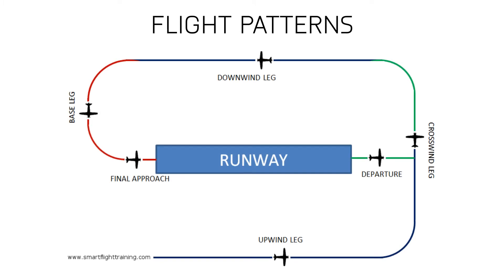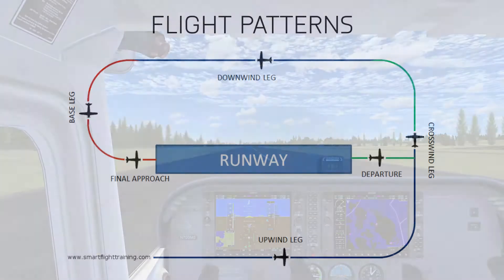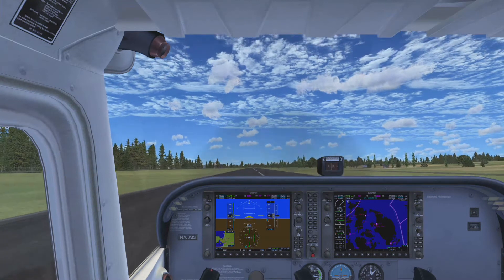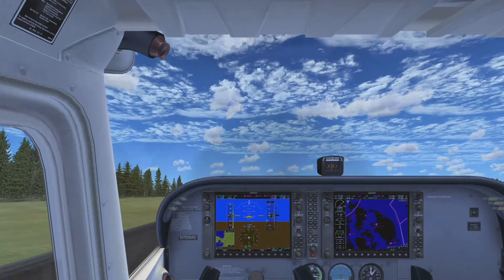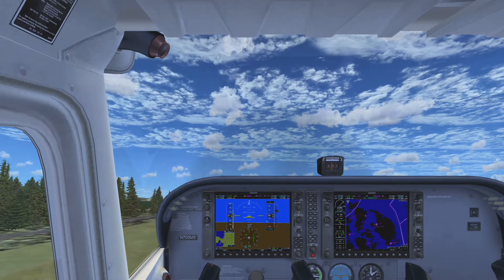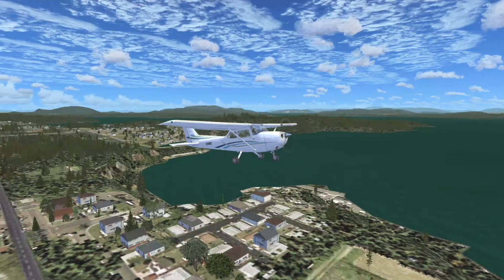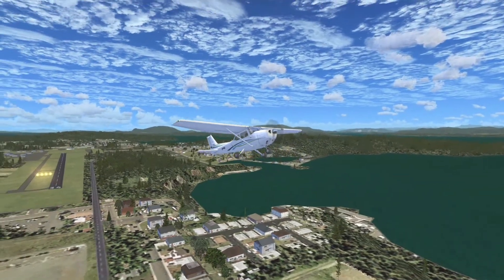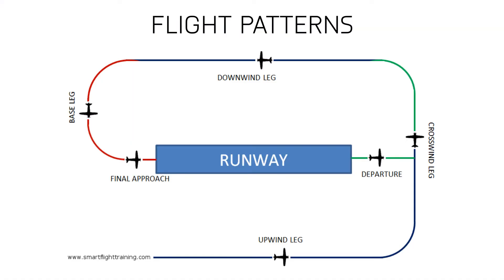Okay, so traffic patterns. This is the diagram that I thought would explain it the best — it's from SmartFlightTraining.com, so you can go and check out their website if you want. We're going to start off with the green departure line here. Basically you take off from the runway and you depart in any direction, and that is simply called departure.